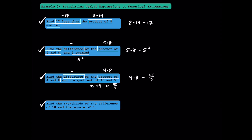Here's the last one: find 2 thirds of the difference of 18 and the square of 3. We're taking 2 thirds of something, which means multiplying 2 thirds by something — remember that 'of' means multiplication. We need the difference of 18 and the square of 3, where difference means subtraction and the square of 3 is 3 squared. So we take 18 minus 3 squared, giving us the expression 2 thirds times the quantity of 18 minus 3 squared.